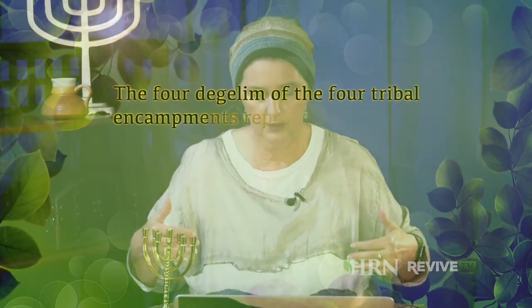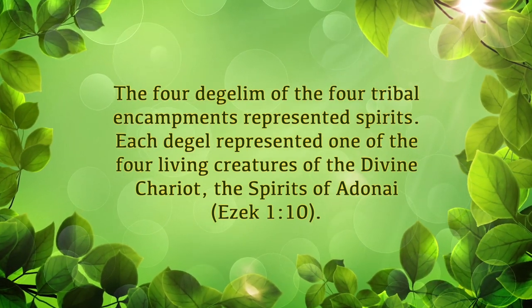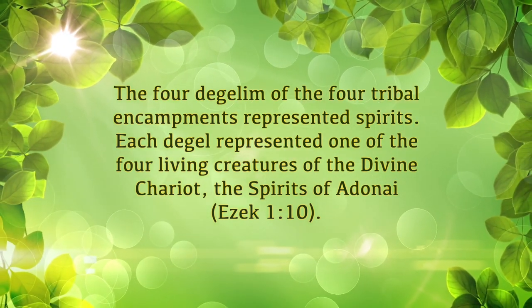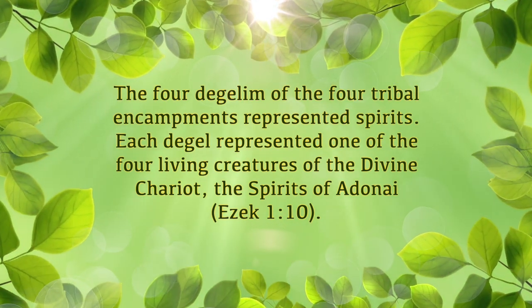Because the Garden of Eden is where the natural realm and the spiritual realm kissed — this is where they embraced. And this is the realm that we want to return to. But until that day, the 12 tribes in those four divisions were supposed to be like that bread that Yeshua sent out with his 12 disciples: take this out to everybody who's sitting on the green grass, the green grass representing anybody who will absorb the word of God. So those four encampments, those four divisions, they represented four spirits from the divine chariot, each one representing one of the four living creatures of the divine chariot from the spirit of Adonai.